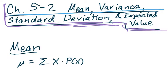Good morning. It is another video from Professor Grenfell's lecture series, Math 12 Statistics. And here we are in Chapter 5, Section 2. We're discussing mean, variance, standard deviation, and the expected value for a probability distribution.